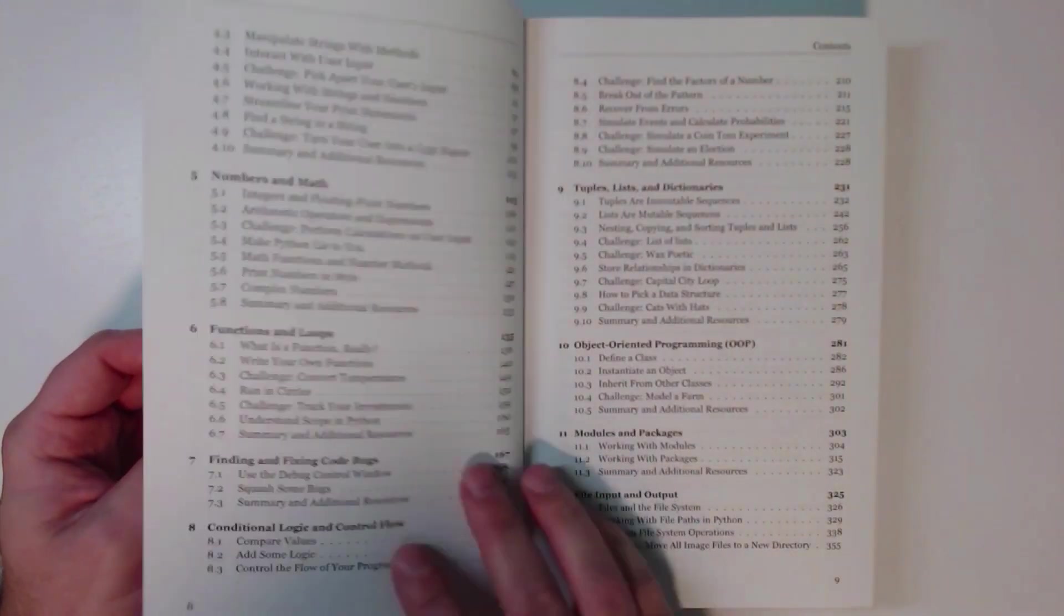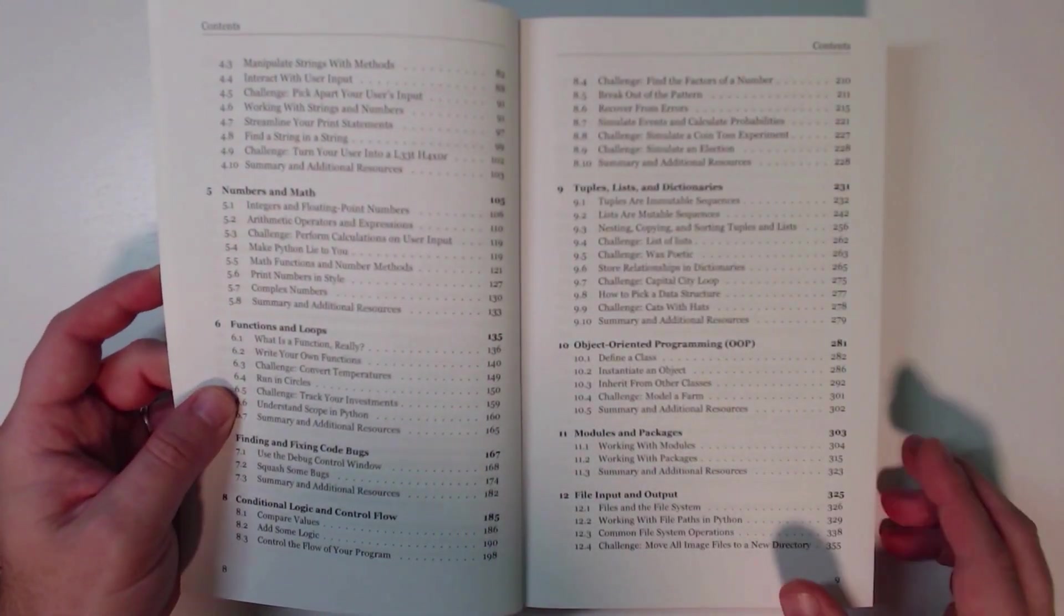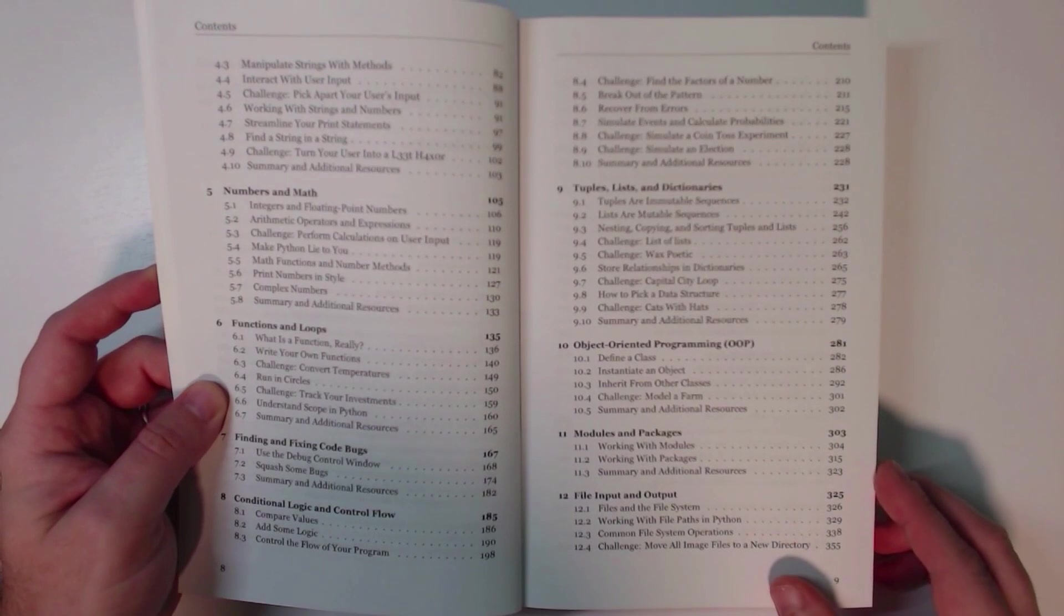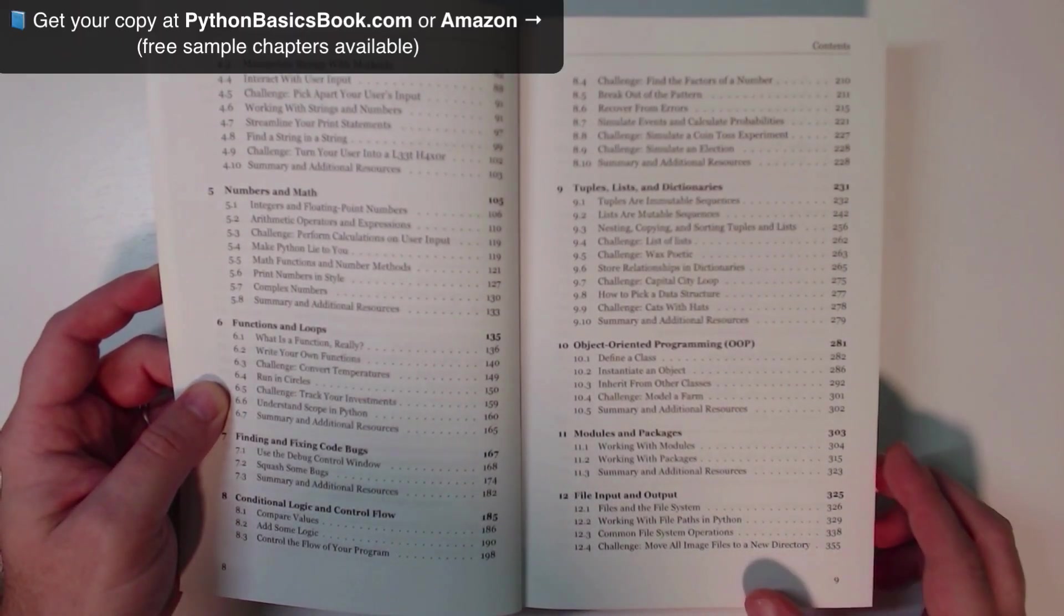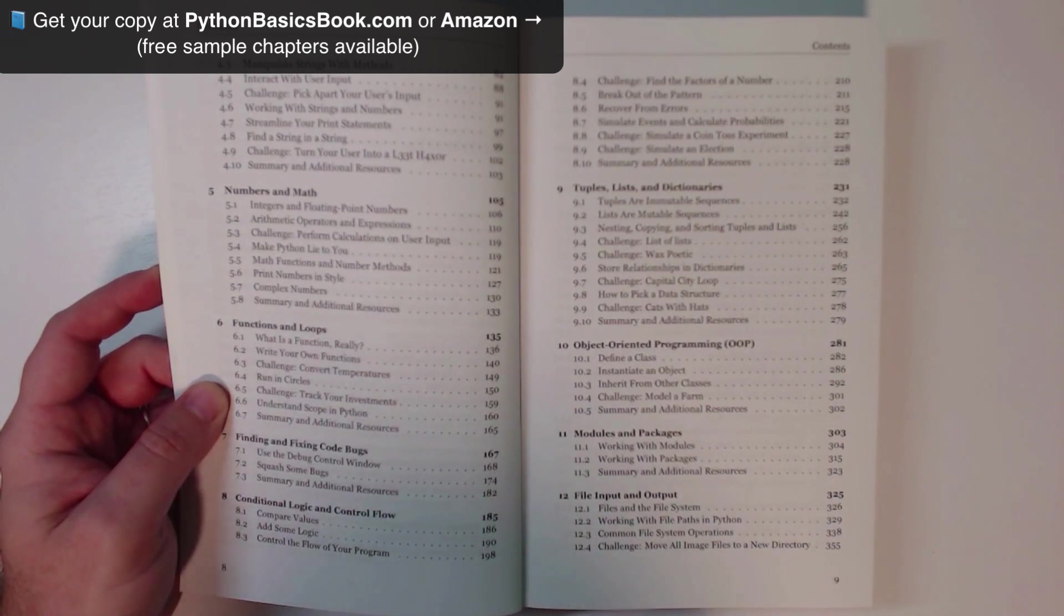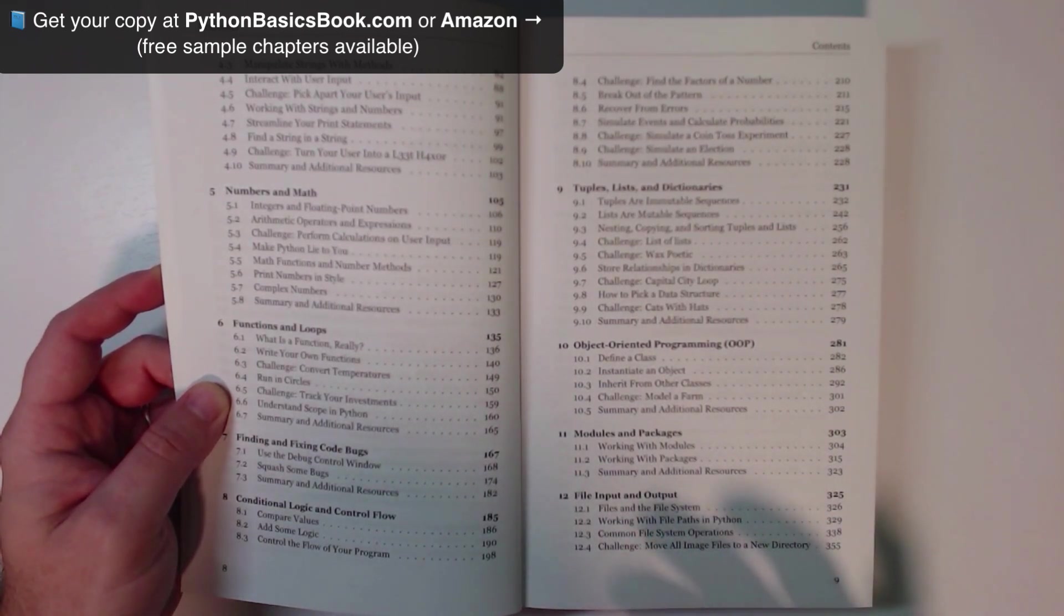We talk about things like strings and string methods, numbers and math, functions and loops, how to find and fix some code bugs. And in particular, we show you how to use the debug control window in idle. So we chose to use the idle editor for this book. And that choice really comes from the fact that idle is included with a typical Python installation.